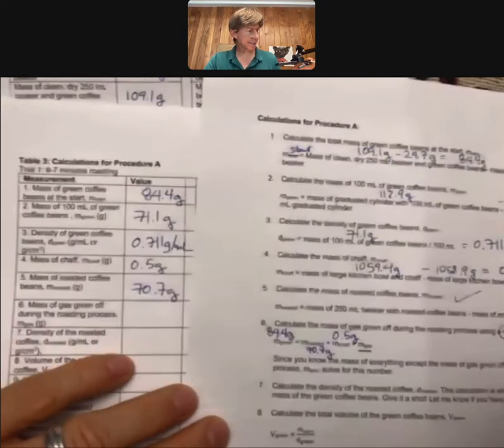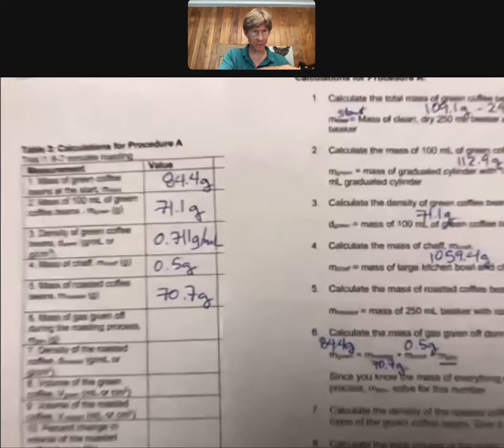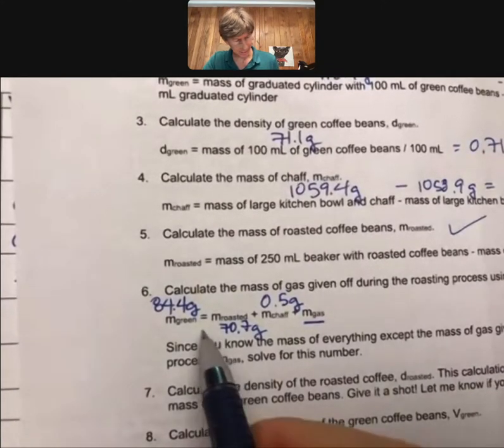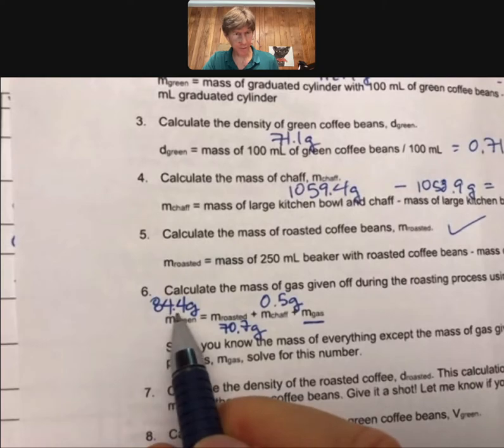To solve for mgas, and we can go ahead and zoom in here on this, so subtract, so take the 84.4,